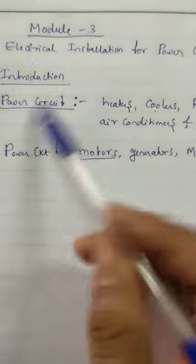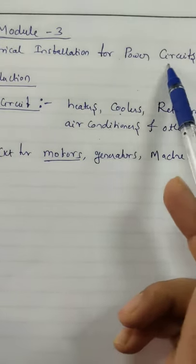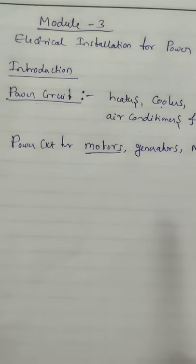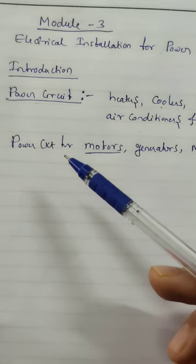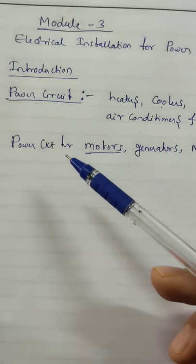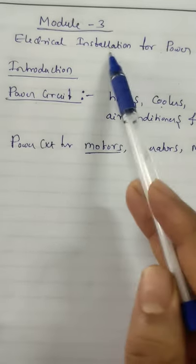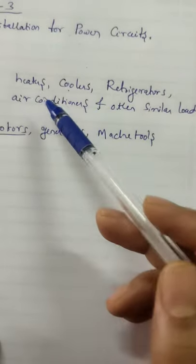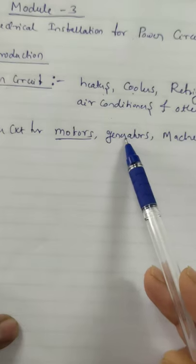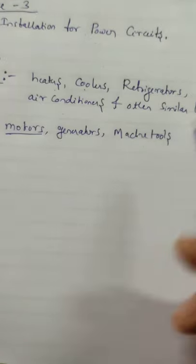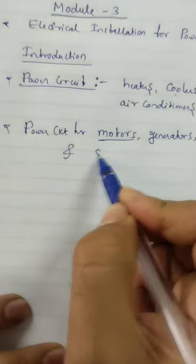Today we will start the next module: electrical installation for power circuits. We have already completed the second module on domestic installations, where we discussed different types of wiring for domestic purposes, safety devices, and electrical wiring for domestic buildings. Now we are going to discuss the electrical installation for power circuits. In your house we use heater coils, coolers, refrigerators, and air conditioners, but in this third module we are focusing on power circuits for motors, generators, machine tools, and other special purpose large loads.